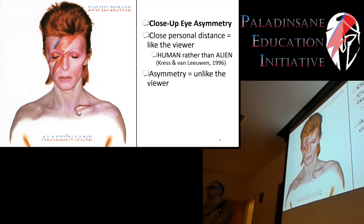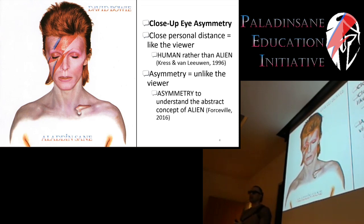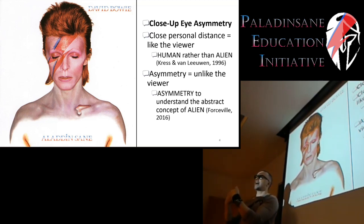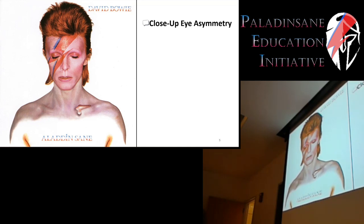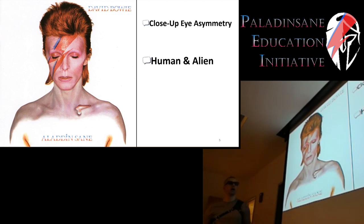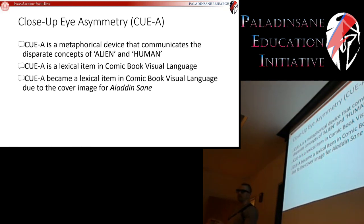However, the asymmetry communicates that this person is unlike the viewer. The asymmetrical placement of the makeup around the eye communicates that this is actually alien, not human. So in this one combination we have two disparate and competing ideas — this is human and not human, like us but not like us. That is the idea being communicated in close-up eye asymmetry: this person is both human and at the same time alien.